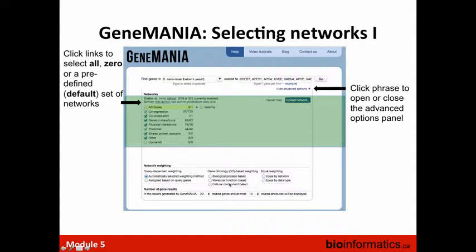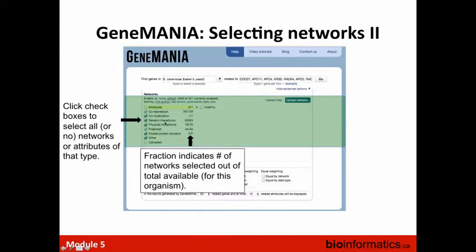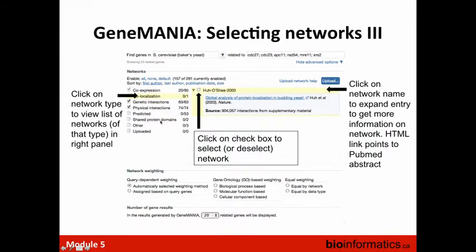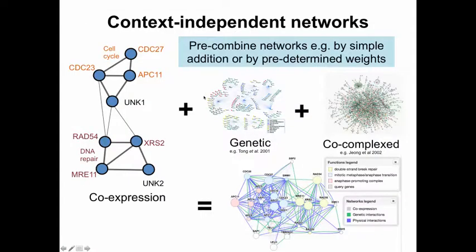In the advanced options network panel, you click checkboxes to select all or some of the networks. This fraction indicates what proportion of networks are there. If you click through on co-localization, for example, there's one co-localization network in yeast — a famous study doing protein localization based on GFP-tagged proteins in budding yeast — and you can click it on or off to include that data or not.